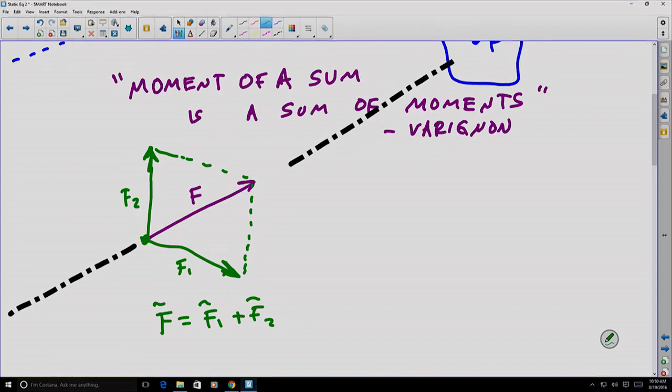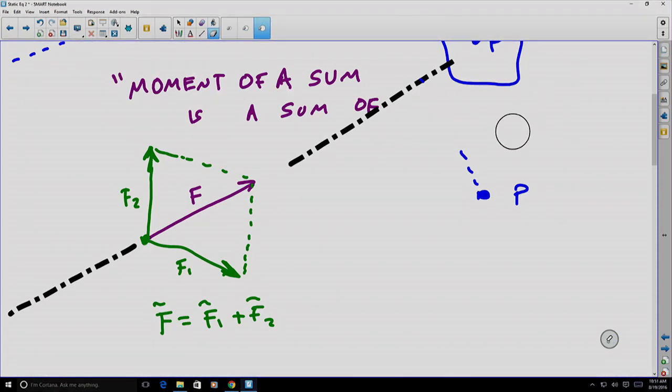Well, according to Varignon, the moment can be found by summing the moments of each of those other forces using their own moment arms. So let's assume we have some point P out here. And we would notice that our moment around point P. Let me erase what Varignon said here and make it very clear, that our moment around point P would be equal to F times D.